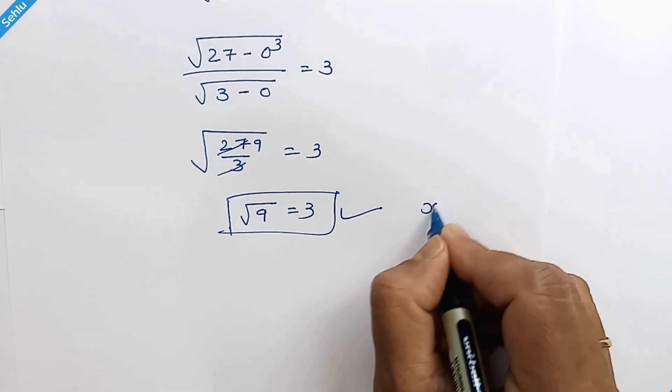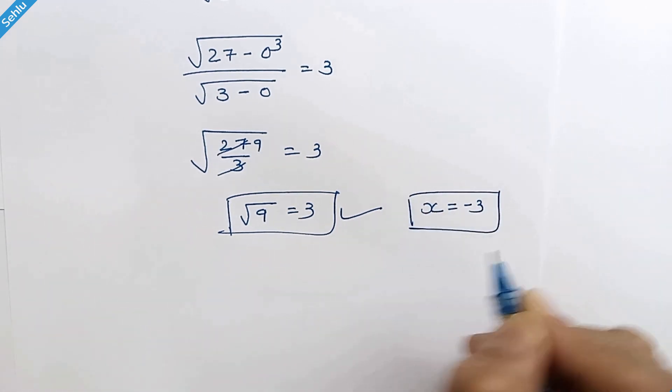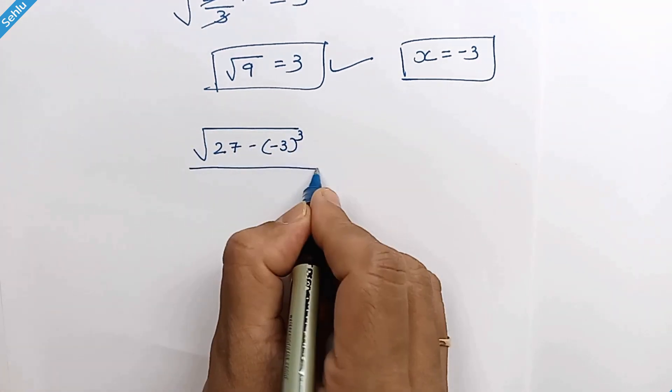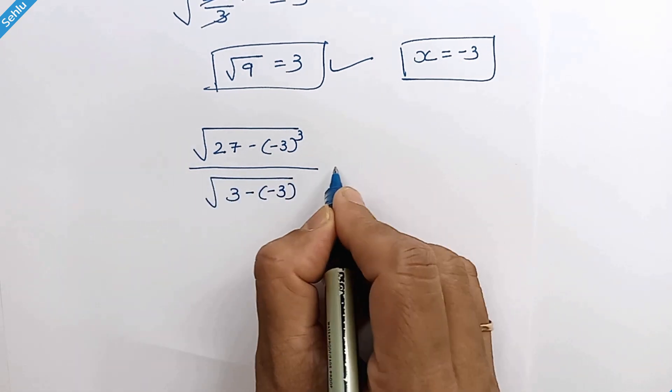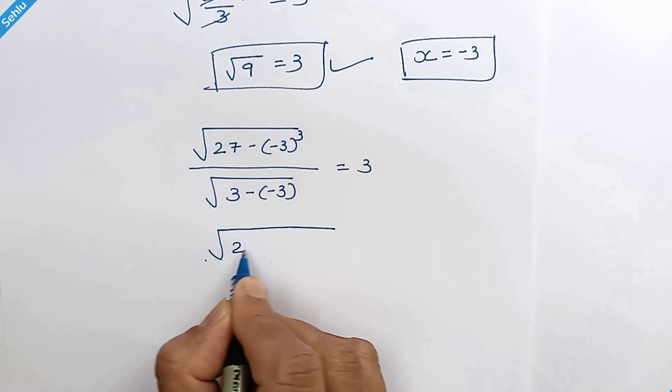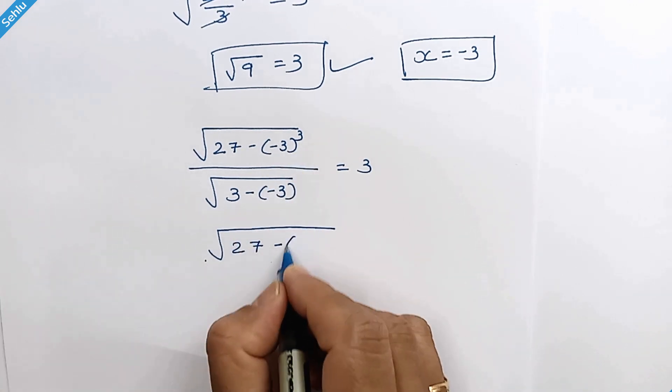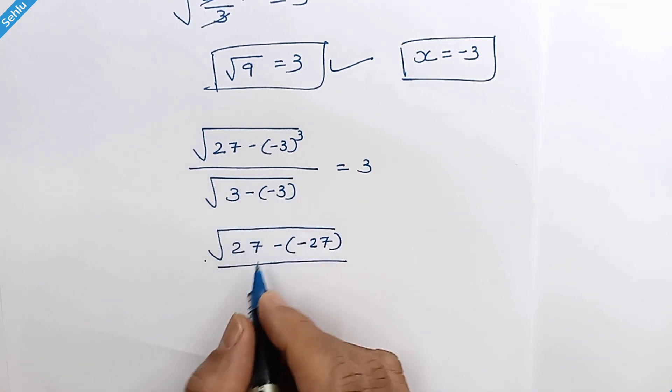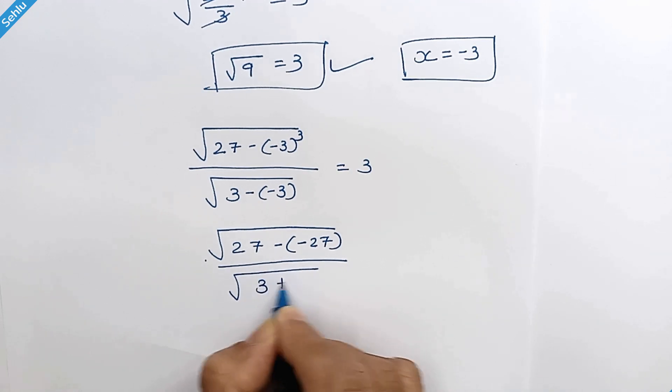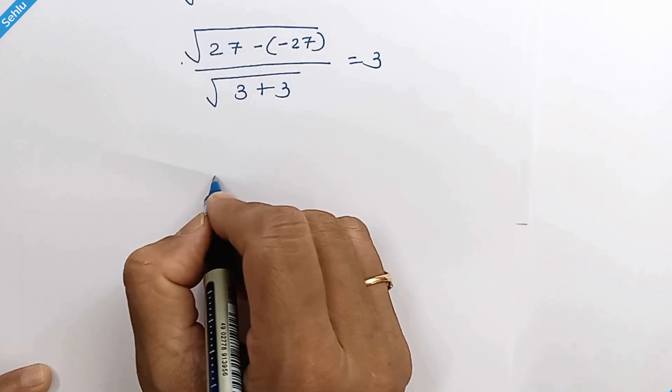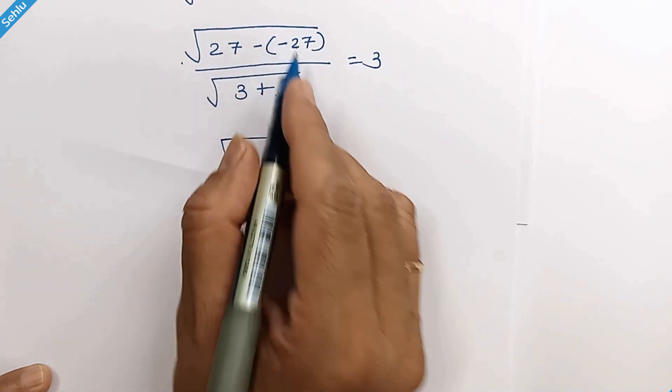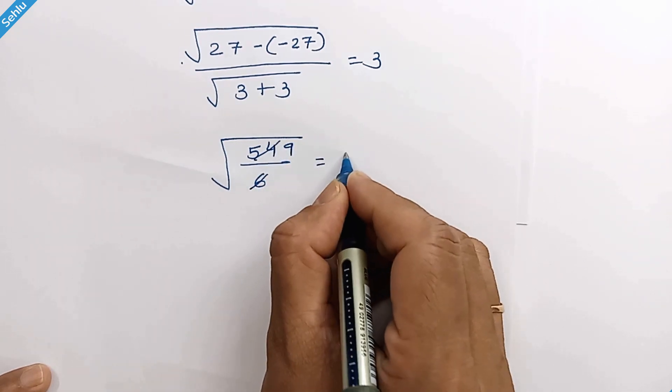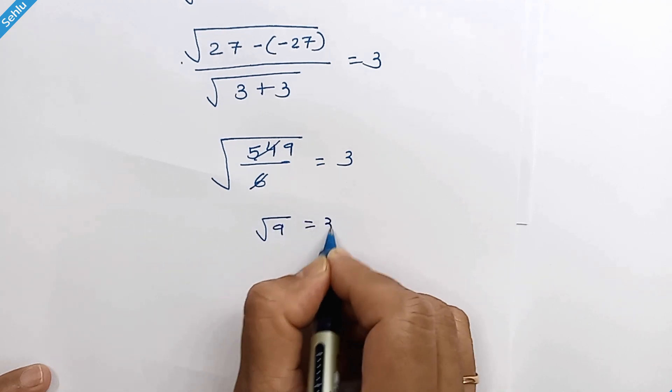Now let's take x equals negative 3. Negative 3 cubed is negative 27, and 3 minus negative 3 is 3 plus 3. So here we have 27 minus negative 27 is 54 over 6. And 6 nines are 54. So we have square root of 9 equals 3.